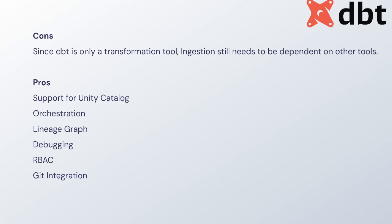Let's talk about a few pros and cons - starting with the cons. When you talk about dbt, it is just a transformation tool; it only does the 'T' part, the transformation part. Because it is only a transformation tool, you still need to ingest the data, so you remain dependent on other tools for ingestion. That is a bit of a challenge because you are heavily dependent on two tools at a time, which might complicate your architecture.